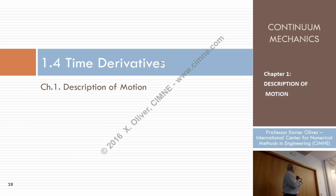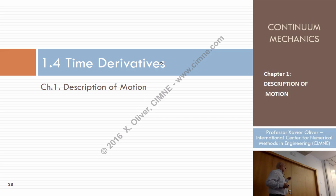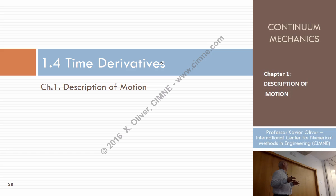What are the equations of motion? We have seen that properties of a continuum medium can be described in two different fashions: one is the material description, in which we describe properties in terms of the particles, and the other is the spatial or Eulerian description, where we describe properties in terms of points of space. Both describe the same properties in a different mathematical way.